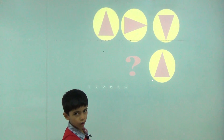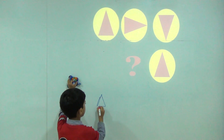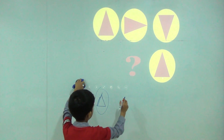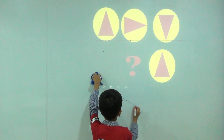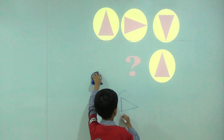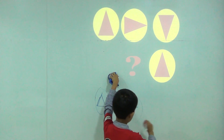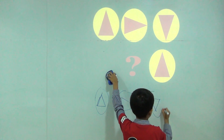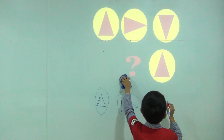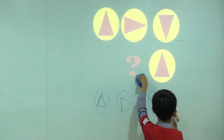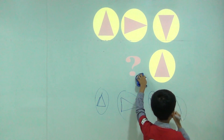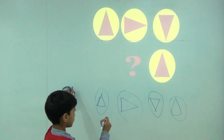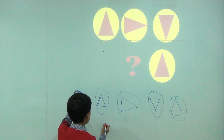This is moving clockwise. First triangle is up, then left side, then down, then up. Then it will come like this.